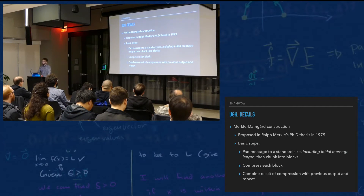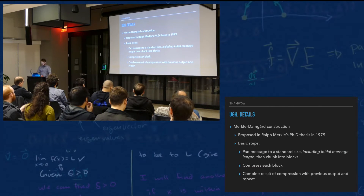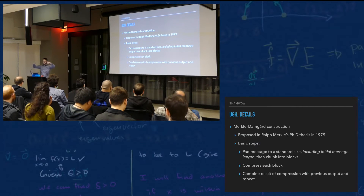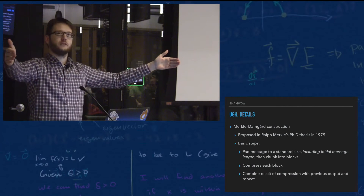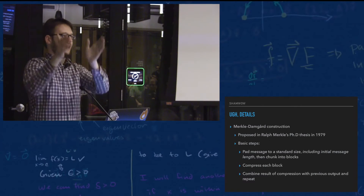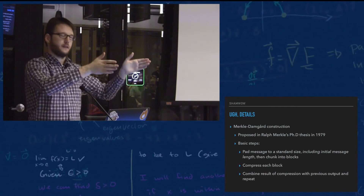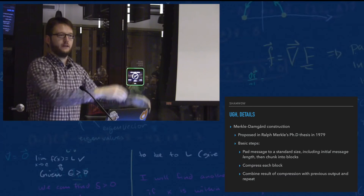SHA-256 uses something called the Merkle-Damgård construction, first proposed in 1979 — it took about 20 years to reach a standards body. The basic way you do it: you take a message, pad it out to a standard size modulo 512, include the message length on the end, chunk it into blocks, compress each block, and add each block to the running total. At the end, you have your hash — you're smushing down the data as you go.